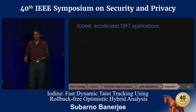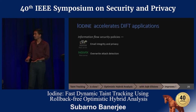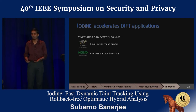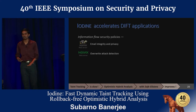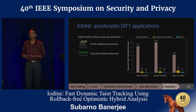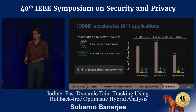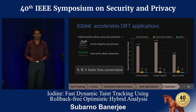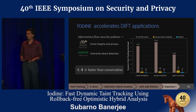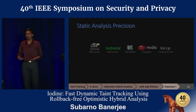We evaluate for two different information flow security policies: email integrity on the Postfix mail servers — for example, that the email body is sanitized and encrypted — and against override attacks on the NGINX web server — for example, that derivatives of user-provided values are not used as return addresses, function pointers, or format strings. We observe orders of magnitude speedup over pure dynamic monitoring and an average of 4.4× speedup over conservative tracking, with this improvement coming from the precision of the predicated static analysis.